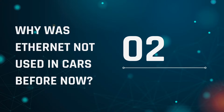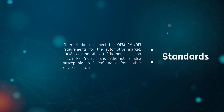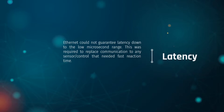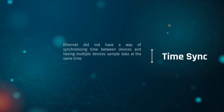Why was Ethernet not used in vehicles before now? Ethernet didn't meet the OEM requirements for the automotive market. 100 megabits per second and above Ethernet has too much radio frequency noise, too much alien noise on the wire from other devices inside the car. Ethernet cannot guarantee low latency due to the low microsecond range required by vehicles — a hard requirement to replace any communication that needs fast reaction times. Also, there was no way for Ethernet to do time syncing between devices and having multiple devices sample data at the same rate.